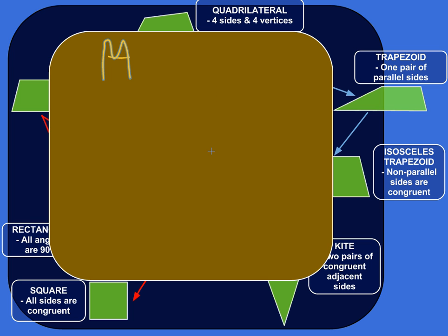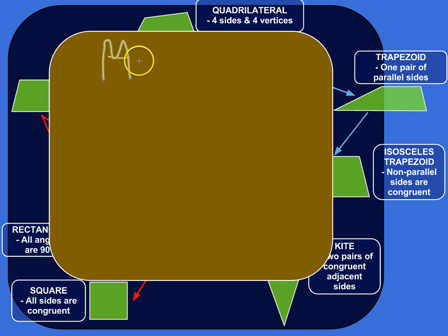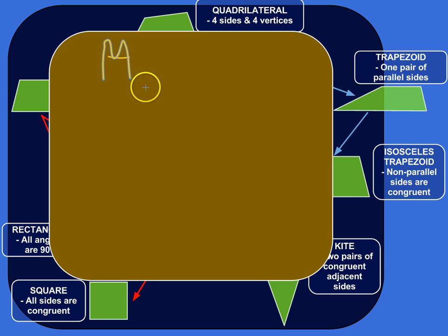Before I do that, I want to do a brief taxonomy that has nothing to do with math, so you can kind of visualize what we're trying to do here. I could have a classification that goes like — I could have mammals as a supergroup here.